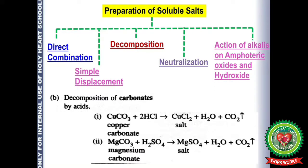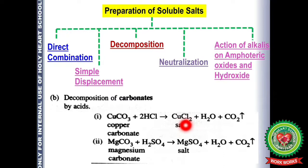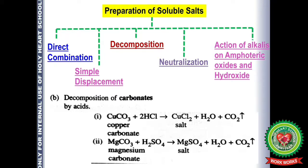The next decomposition reaction is of carbonates by acid. Similarly, carbonates produce CO₂ gas. If HCl is used, the salt formed is CuCl₂ since the valence of copper is +2. If H₂SO₄ is used instead, the anion changes — for example, using magnesium carbonate with H₂SO₄ gives magnesium sulfate and CO₂ gas.